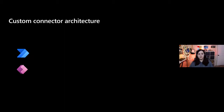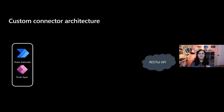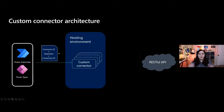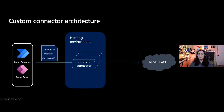Let's look at the architecture of how custom connectors work. You have Power Automate and Power Apps on one side, and your RESTful API on the other. You build a custom connector in a hosting environment — for example, Azure API Management, which has native integration. Power Automate and Power Apps consume that custom connector. When a user consumes one of your connectors, they authenticate into it — passing credentials via Azure AD, an authentication token, whatever you've configured — connecting with their unique credentials when they load the application or workflow.